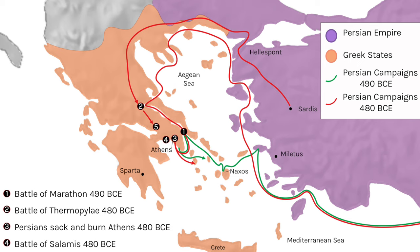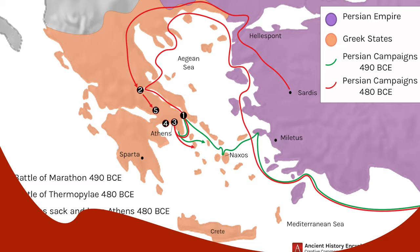The Persian Wars were a number of battles and conflicts between the Greek city-states and the Achaemenid Persian Empire, beginning in 490 BCE and continuing on and off until peace was reached 41 years later in 449 BCE. The most significant battles of the wars were Marathon, Thermopylae, Salamis and Plataea, all of which had become legendary.